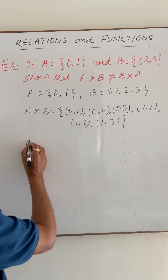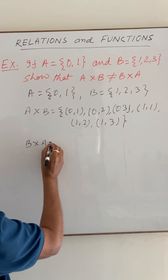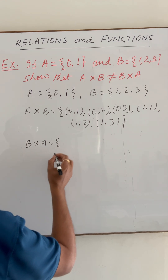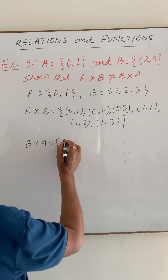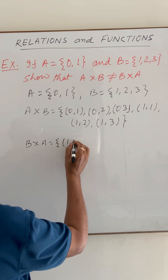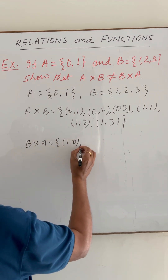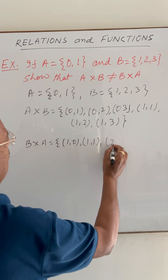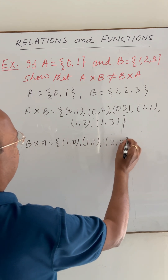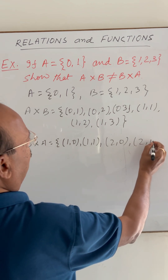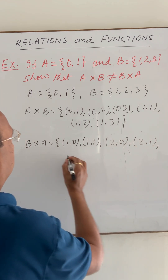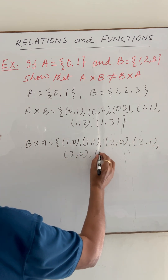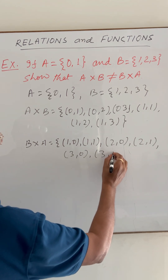Similarly we can find out B cross A. Here also there will be 6 elements. These are: (1,0), (1,1), (2,0), (2,1), (3,0), and (3,1).